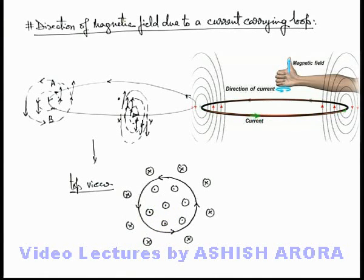So this is the way how we can obtain the direction of magnetic field in the surrounding of a current carrying coil in its plane.